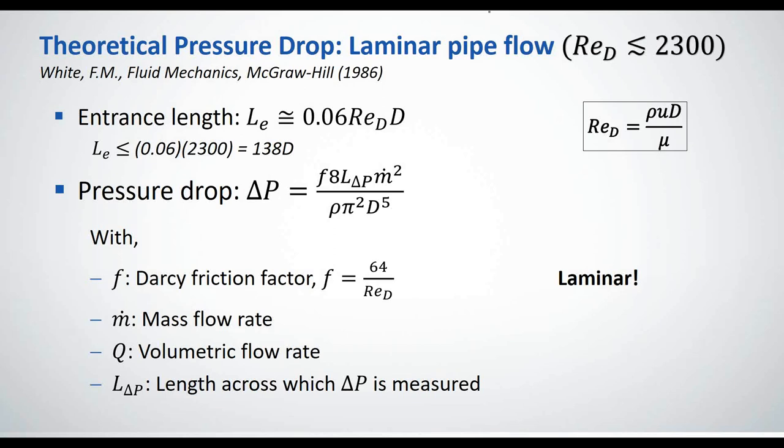And the Reynolds number that we use in pipe flow is using the diameter of the pipe as the characteristic length, as you can see here in the boxed out expression. I'm sure all of you know this. So then when we're working out the theoretical pressure drop, again, we're assuming fully developed flow at this case. So you have to measure your pressure drop over a length past the entrance length. So if your entrance length is 80 meters, then you need to start measuring your pressure drop from 80 meters to the end of your pipe.